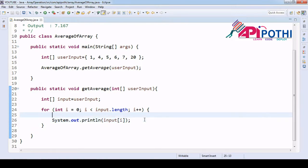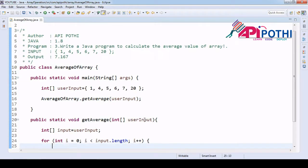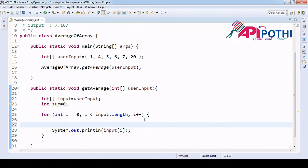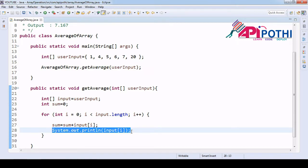As we already discussed, to find the average first we need to get the sum. So to get the sum, int sum equals zero. I created one local variable. Sum equals sum plus this one.